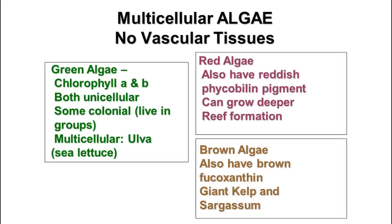The multicellular algae are often called seaweed, and these are algae—not plants. They're still in Kingdom Protista because they don't have vascular tissue. Plants have tube-like tissues called xylem and phloem that allow water, minerals, and food to move through the plant, and seaweeds do not have those. There are three main groups of multicellular algae: the green algae, the red algae, and the brown algae.